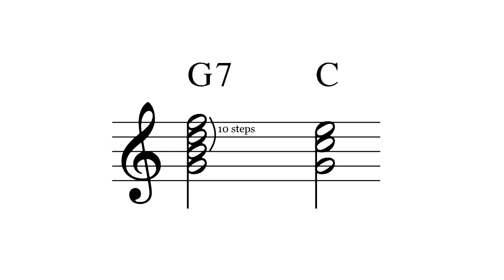In 12th tet there's only one size of tritone, but in 19th tet there are two. The tritone found between the 3rd and 7th of this dominant chord is the large tritone, 10 steps wide.